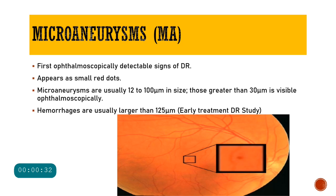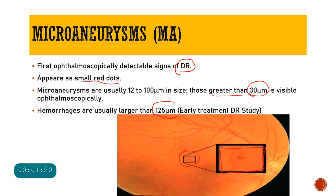The first finding, and the most common finding, is the presence of microaneurysms. They occur first — they are the first ophthalmoscopically detectable signs of diabetic retinopathy. They appear as small red dots, usually about 12 to 100 micrometers in size, and those which are 30 micrometers or greater will be visible ophthalmoscopically. Hemorrhages are usually larger than microaneurysms — more than 125 micrometers — whereas microaneurysms are at most about 100 micrometers, as established by the Early Treatment of Diabetic Retinopathy Study.